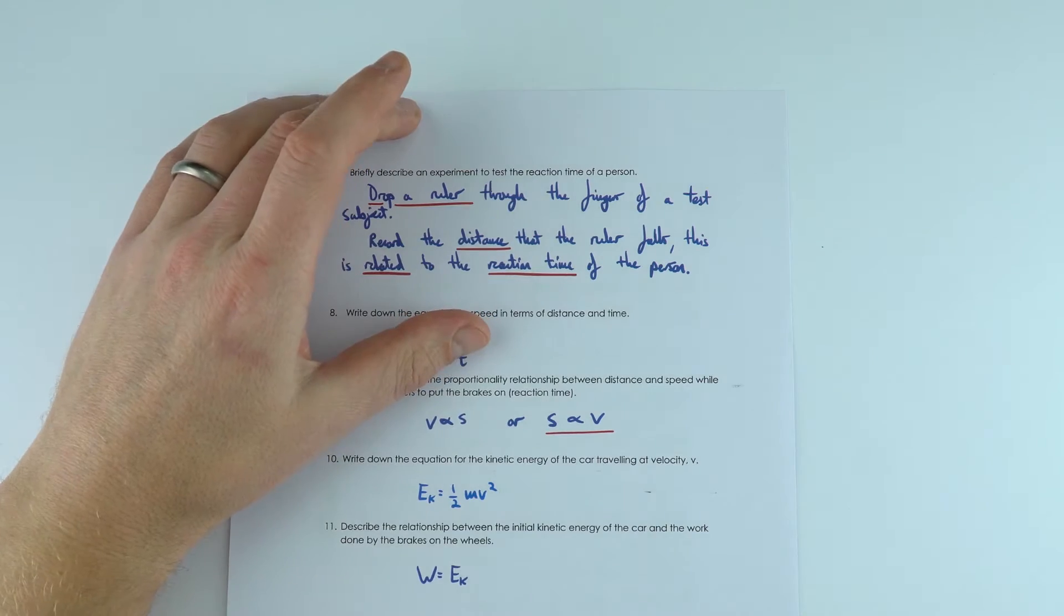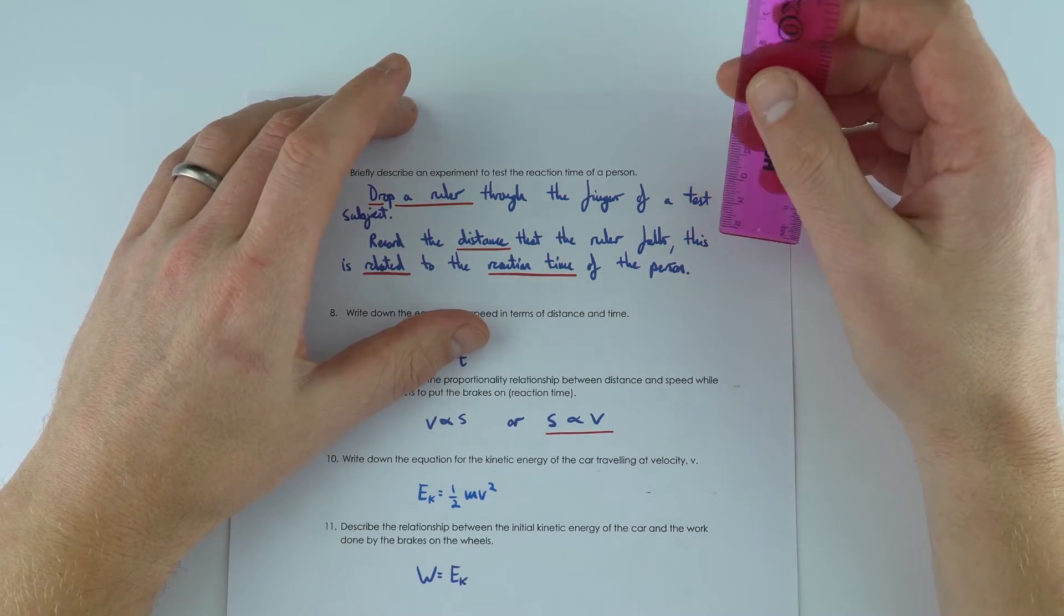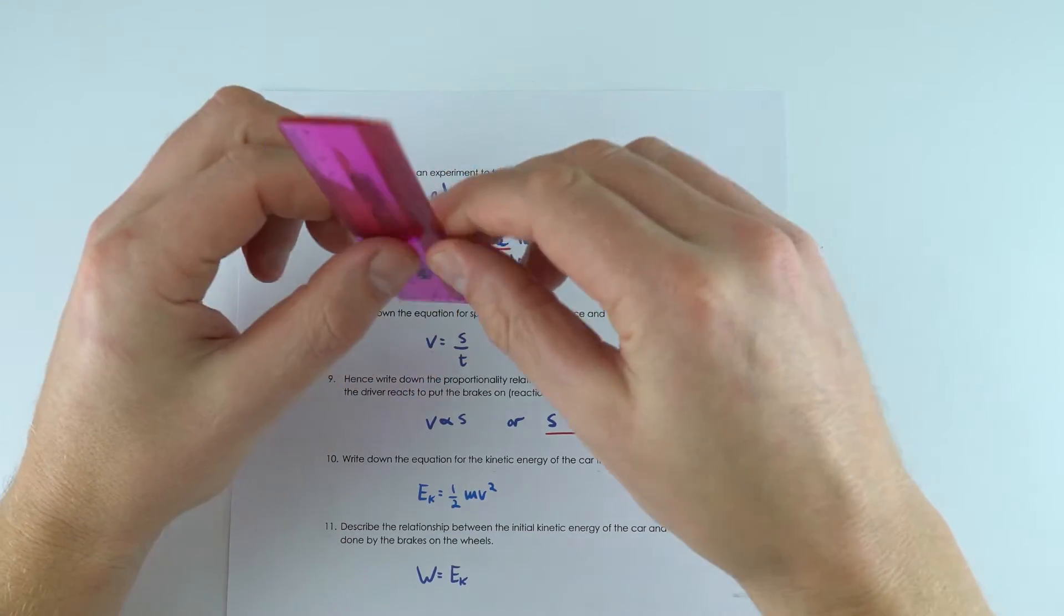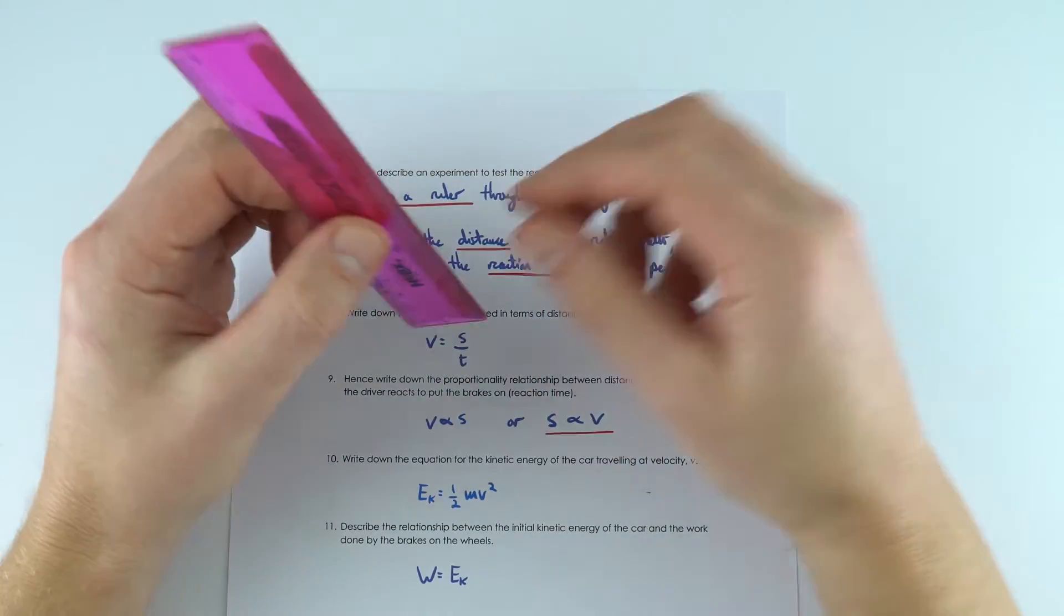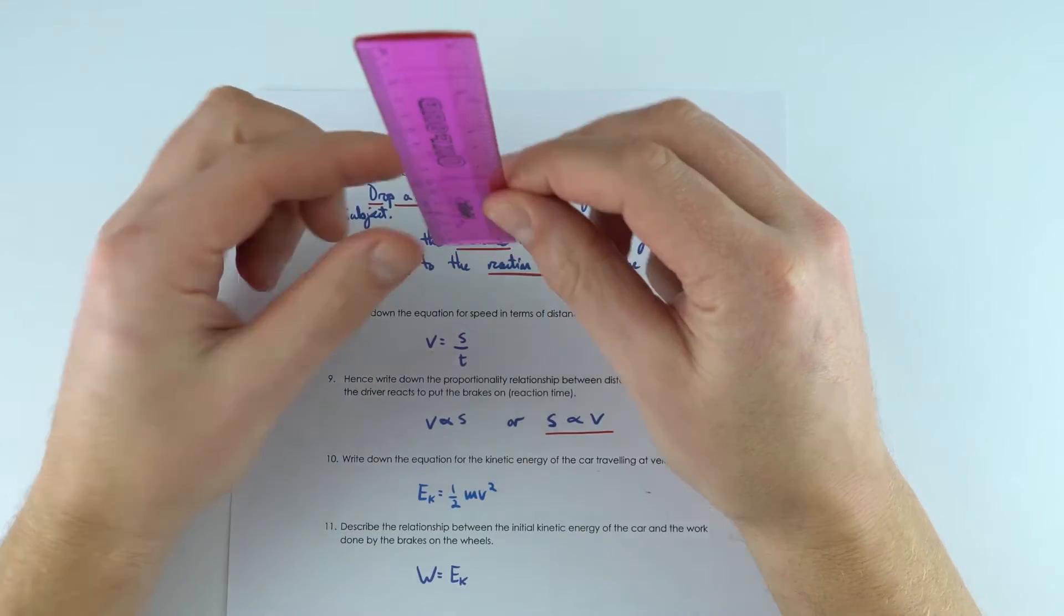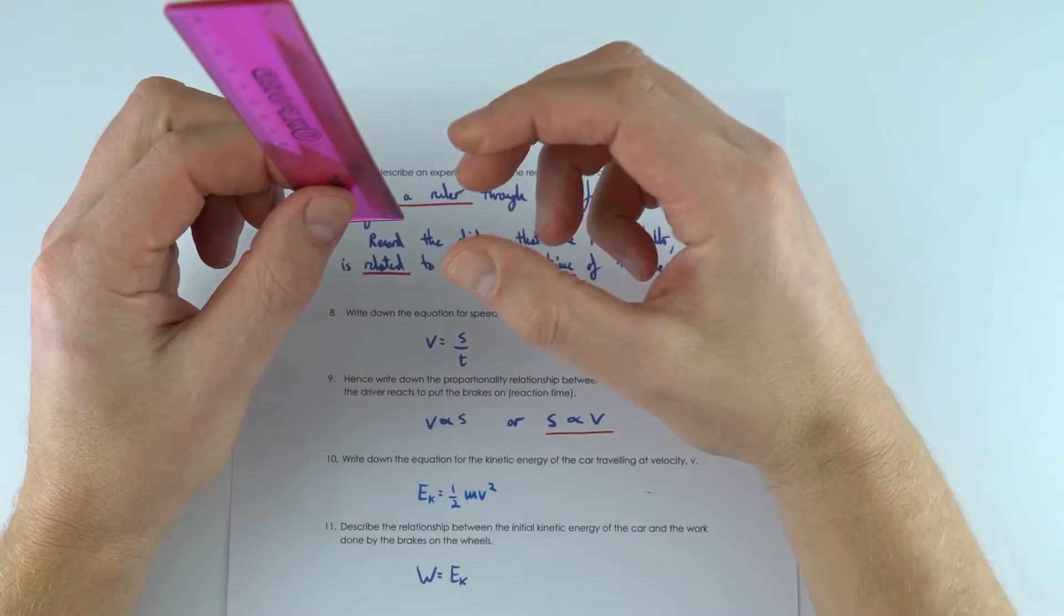Now an experiment that you can have a go at doing maybe in school with your friends is you could drop a ruler through the fingers of another person and record the distance that the ruler falls, which is then related to the reaction time. Effectively, if they've got a quicker reaction time, the ruler's not going to drop as far.